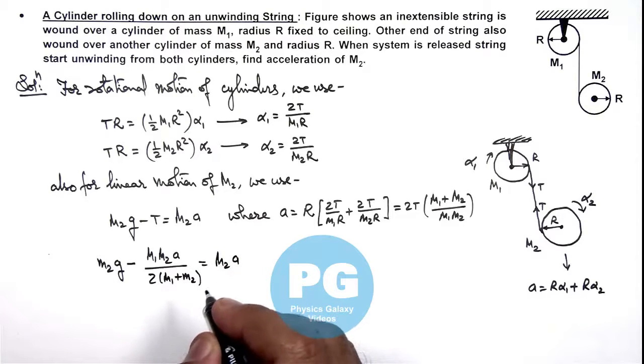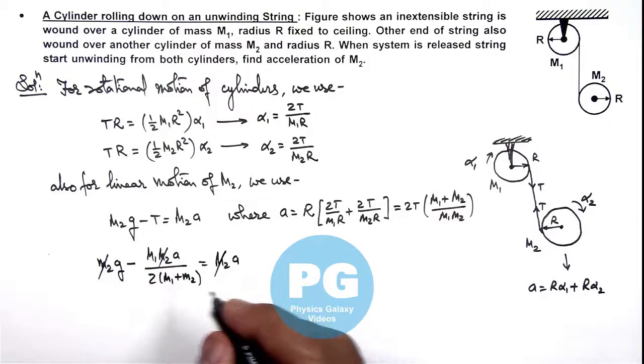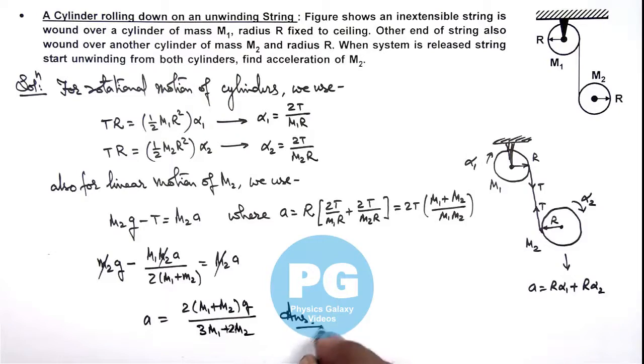In this equation, the value of m2 gets cancelled out. On solving this we'll get the value of acceleration. You can simplify this relation, which gives twice of m1 plus m2 g divided by 3 m1 plus 2 m2, and that is the result of this problem.